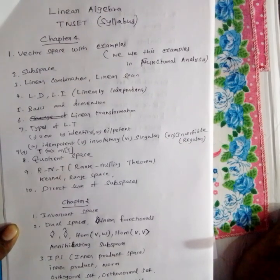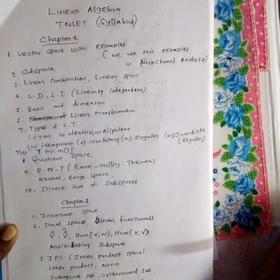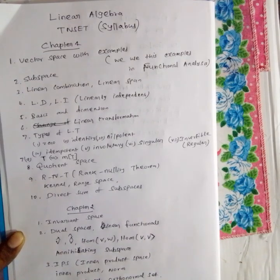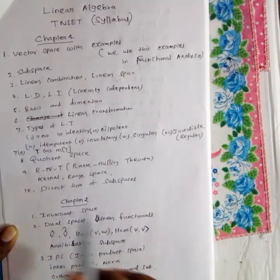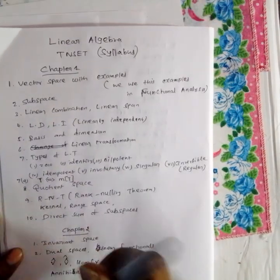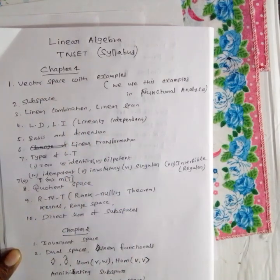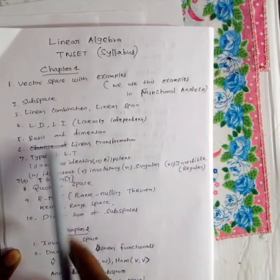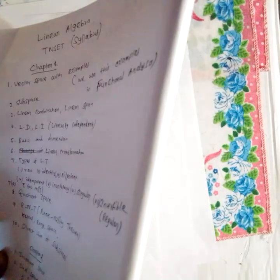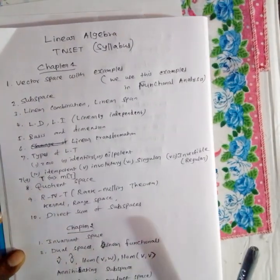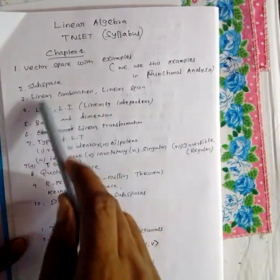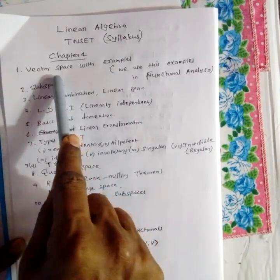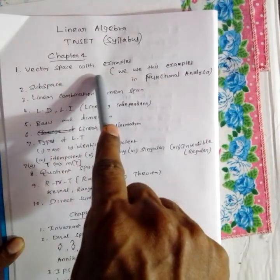We are going to miss one thing, but this is the important thing. Let's look at the first chapter — it seems to be one quarter. Let's do our paperwork. We are going to talk about Chapter 4. Let's look at the vector space and standard examples.